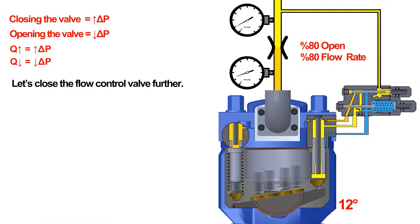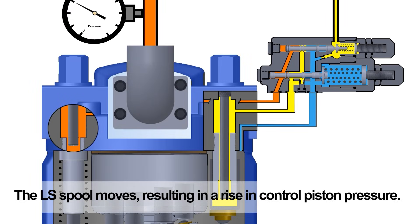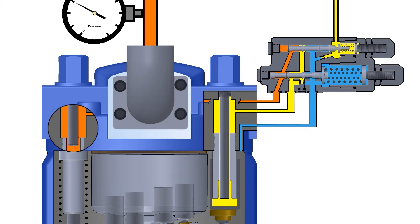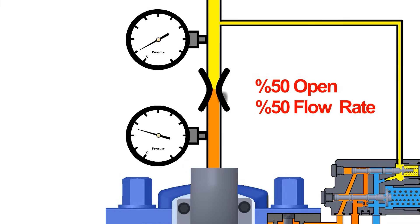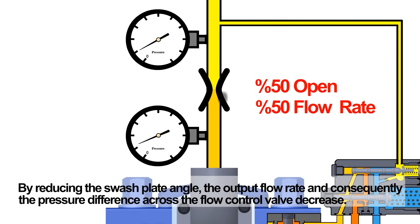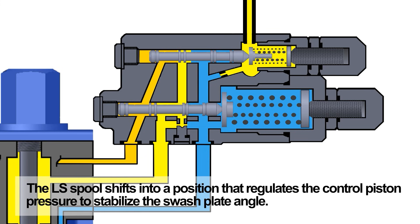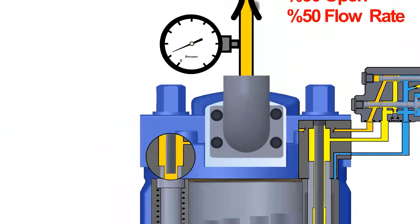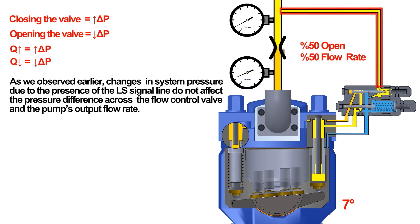As the flow control valve is closed, the pressure differential increases. This causes the LS spool to move, connecting the control piston to the pressure line. Since the cross-sectional area of the control piston is larger than that of the bias piston, the force it exerts on the swash plate is greater, pushing the swash plate toward a smaller angle. By reducing the swash plate angle, the pump's output flow rate decreases, which leads to a reduction in the pressure difference across the flow control valve. With this reduction, the LS spring pushes the LS spool into a position where the control piston pressure keeps the swash plate angle constant. All these steps occur within a fraction of a second. Changes in system pressure due to the LS signal line do not affect the pressure difference across the flow control valve or the pump's output flow rate.